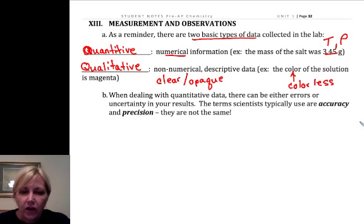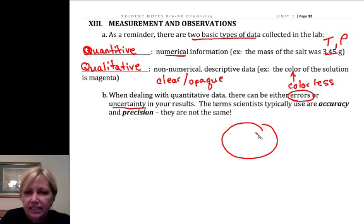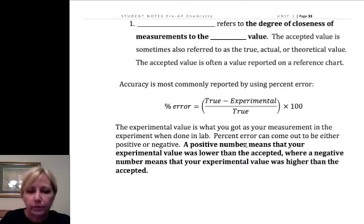Now, when we are dealing with quantitative data, we may have errors or uncertainty. I mean, the likelihood that we are right on the bullseye is pretty slim. And there's two terms that we're going to be using. We use accuracy and precision, and they don't mean the same thing. So you want to make sure you can compare and contrast those two terms.